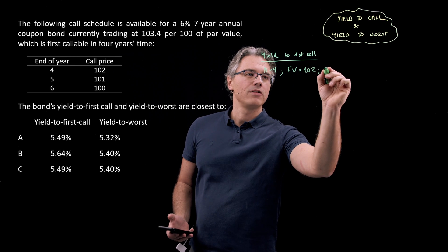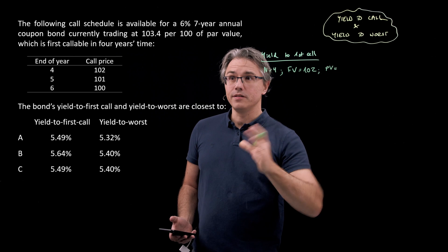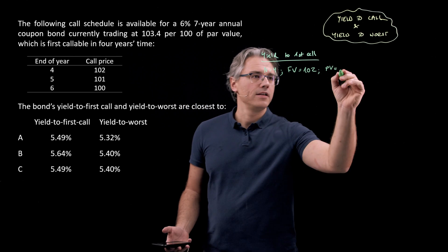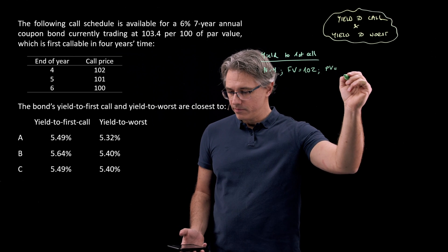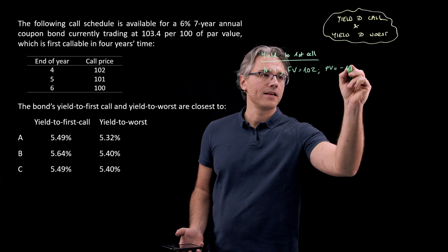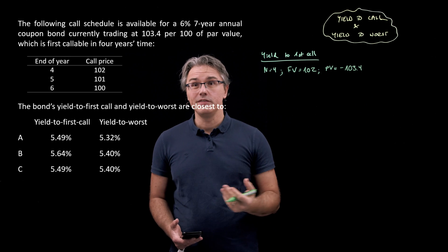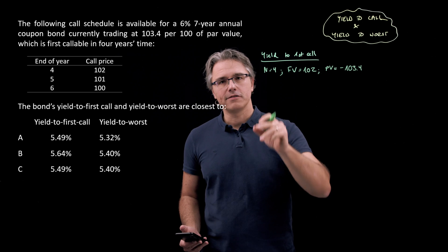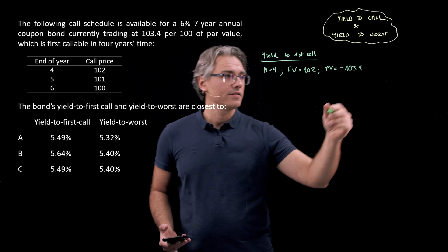Now what is the current price of the bond, the PV, the present value? We are told in the question that the bond is trading at 103.4 per 100 of par value. So that's a negative 103.4. Remember that the PV input in the time value of money worksheet should be negative if you're going to express the future flows as something positive.